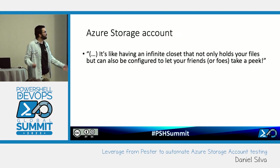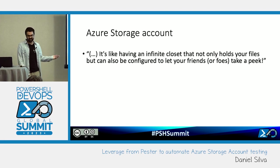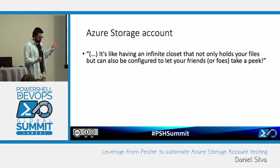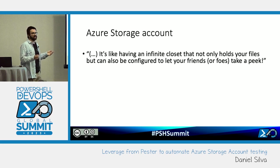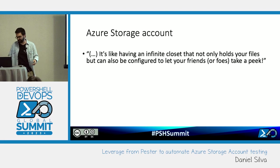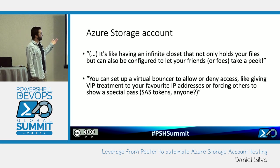Storage accounts are pretty similar to S3 buckets on AWS — it's a place where you can throw all the files that you want. ChatGPT says it's like having a closet that holds all your files but also can be configured to allow your friends or foes to take a peek. The key point is that once inside a storage account you can go from the most simplistic way — anonymous access, storage as a CDN — all the way to super restricted: IP whitelist, subnets, private network access only. You can set up a virtual bouncer, allow or deny access, whitelist IPs, and use things like a SAS token for special access.